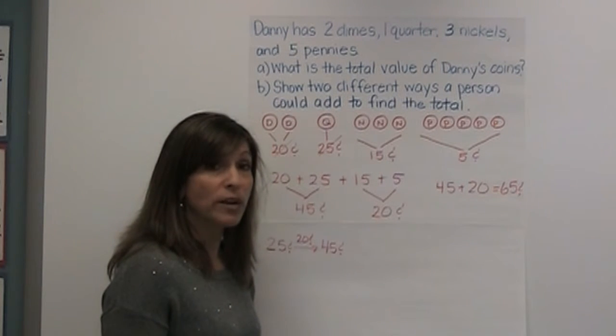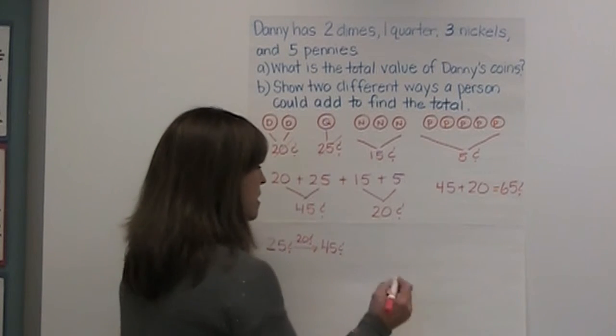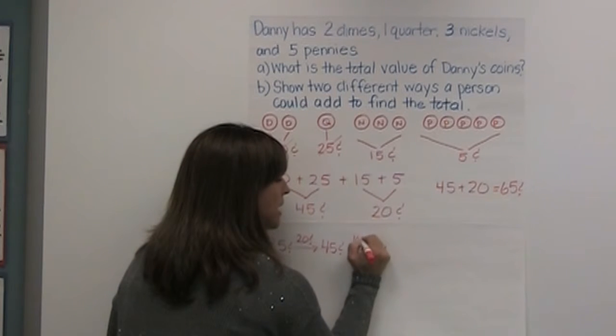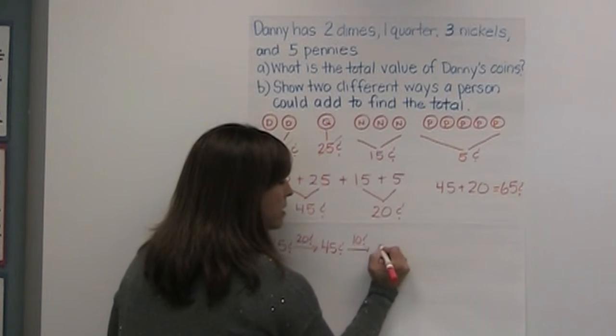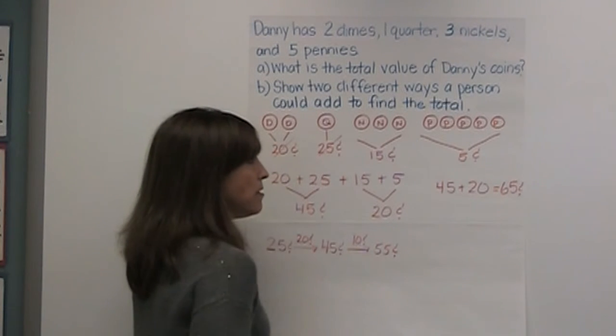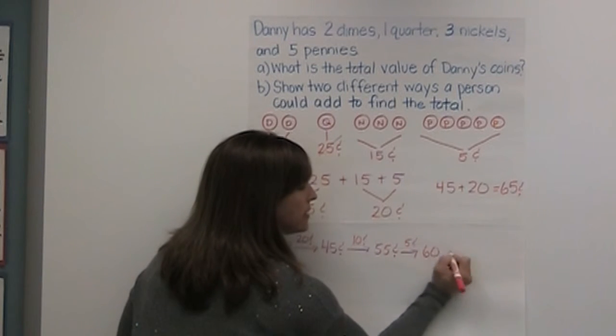To make a friendlier number, I'm going to break up my fifteen into one group of ten and five ones. So to make my one group of ten, I then add ten cents to make fifty-five cents. Then I take the five and I add five more cents to make sixty cents.